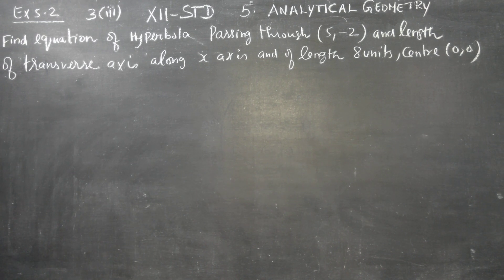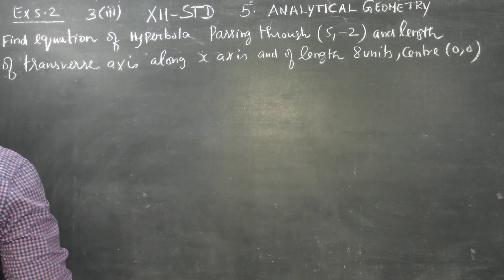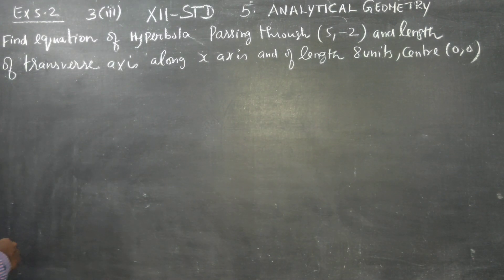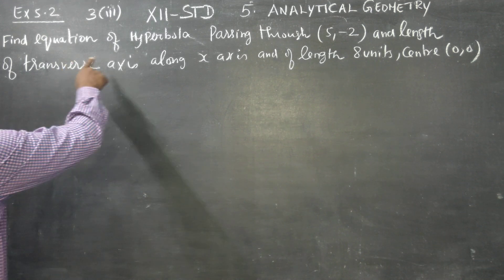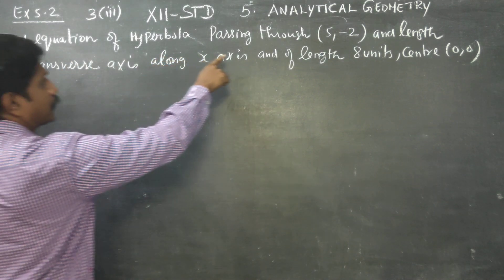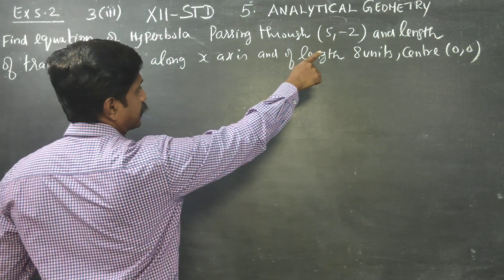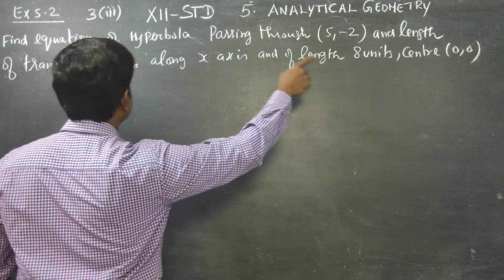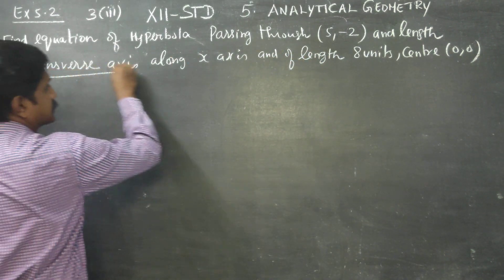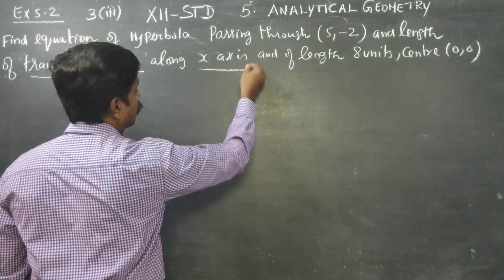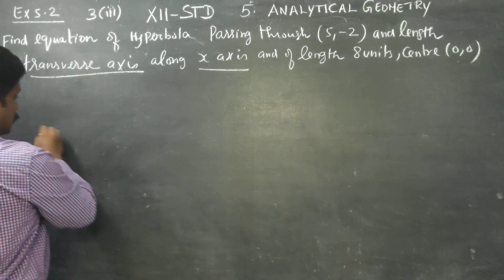Dear 12th standard students, in exercise number 5.2, third subdivision: find the equation of the hyperbola passing through (5, -2) where the length of the transverse axis is along the x-axis.